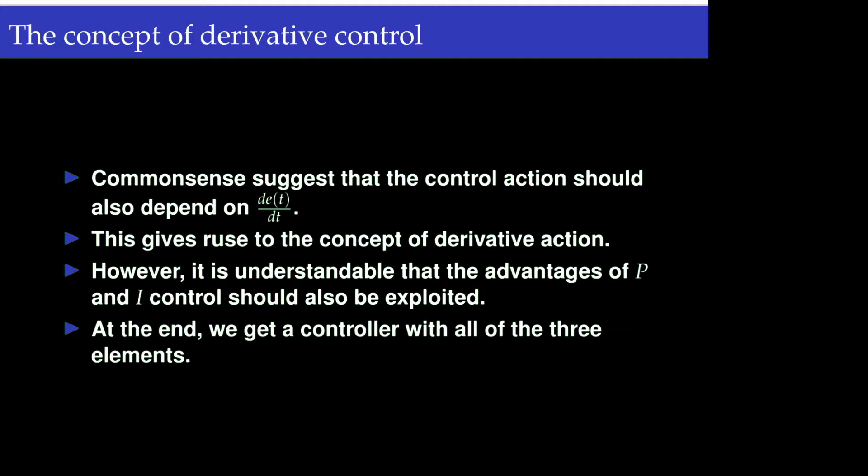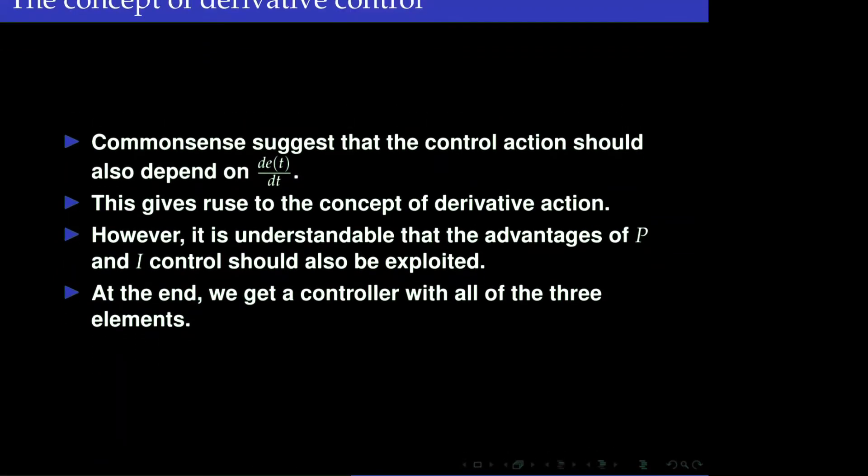Common sense suggests that if the error changes faster, or in another case the error changes slower, the control action cannot be the same — meaning the rate of change of error should have an effect on deciding the control action. This gives rise to the concept of derivative control. The proportional control has its own advantage and the integral control has its own advantage, so we want to keep the advantages of both.